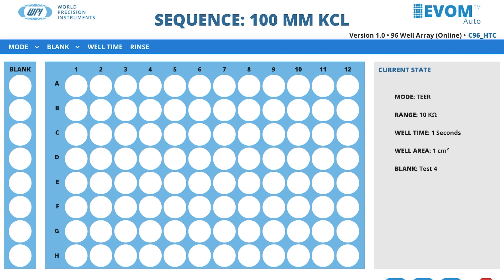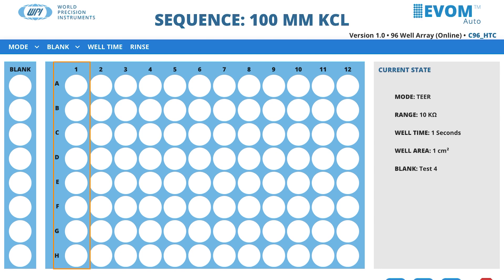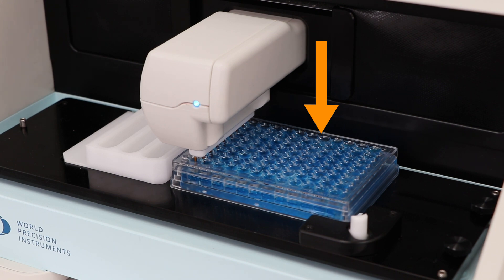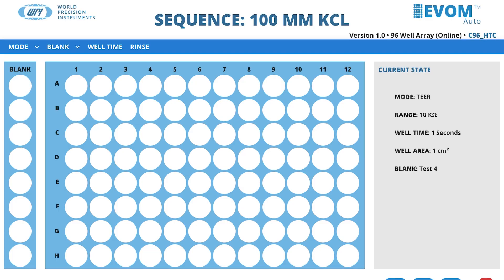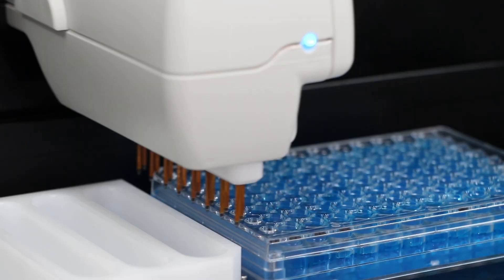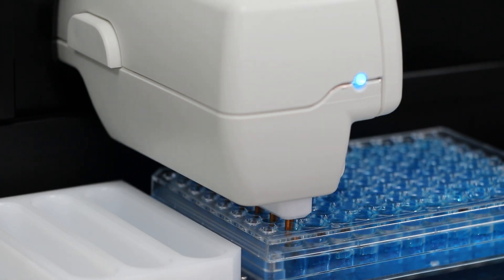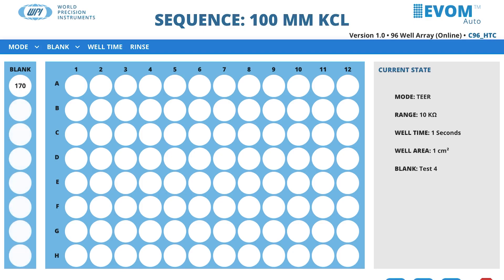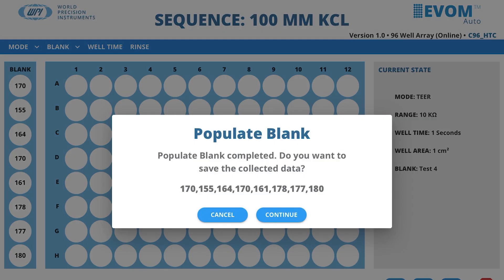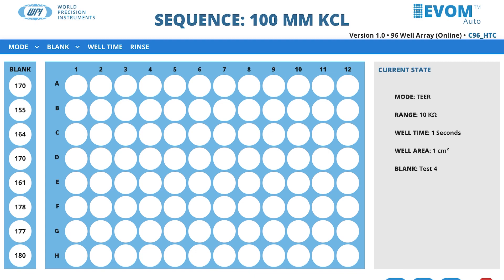The blank name is updated on the current state area. Load a well plate with media or buffer in the first column of wells and place it in the HTS well plate area on the Auto Sampler. To measure the blanks and load that information into the blank container, select the Blank menu and choose Populate Blank. The Auto Sampler moves the electrode array to column 1 and measures all eight values. The values are shown in the blank area on the window as they are populated. After the measurement is complete, you may resample the blanks as many times as desired, now or in the future, by loading this container and running the Populate Blank option again.